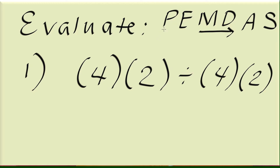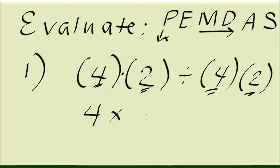To clarify, we call it parenthesis if there's some mathematical work that we need to do inside the parenthesis. In each of these parentheses, notice that there's really nothing else we need to perform, so we're not going to call it parenthesis. Instead, this parenthesis represents the operation multiplication. So there's no P in this mathematical expression. If you're going to rewrite this, instead of using parenthesis — because the parenthesis stands for multiplication — we're going to use the regular standard multiplication symbol. So this is the same as 4 times 2 divided by 4 times 2.